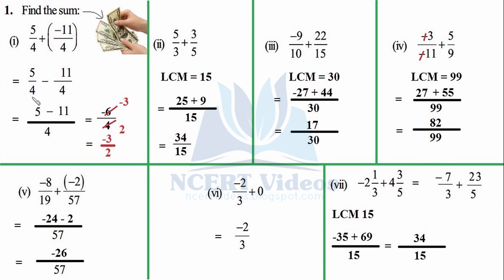Since the denominators are the same, you don't have to take any LCM. Write 4 as the common denominator: (5 − 11)/4. The greater sign is negative, therefore the result is negative, and you subtract: 6/4. This is further reducible — we have to write the rational number in standard form. So 2 divides both: −6/4 = −3/2. That is your required sum for the first part.